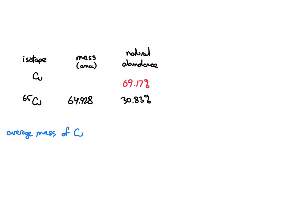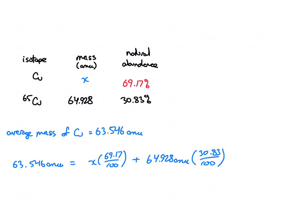So this is 63.546 amu, so let's set up an equation here. 63.546 amu is equal to our unknown, I'm going to call this x for now, and this is 69.17 over 100, plus 64.928 amu times 30.83 over 100.